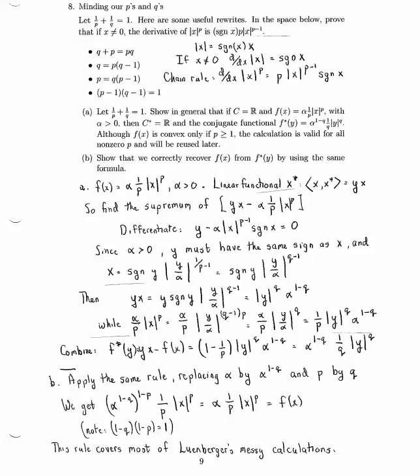Absolute of y to the q times alpha to the 1 minus q. And what do you know? When we combine the two terms, they have different coefficients. The first one, a coefficient of 1. The second one, a coefficient of minus 1 over p. But 1 minus 1 over p is 1 over q. And there's our answer. Alpha to the 1 minus q times 1 over q times the absolute value of y to the q.